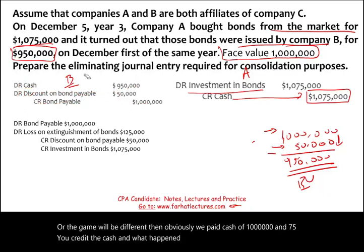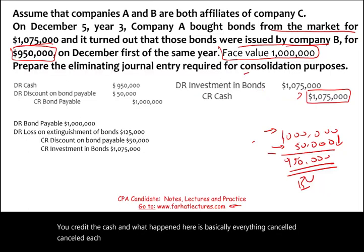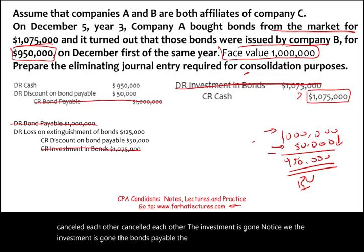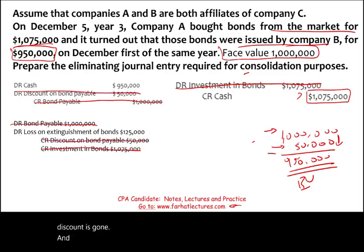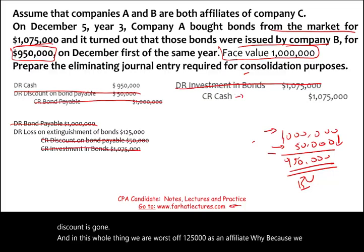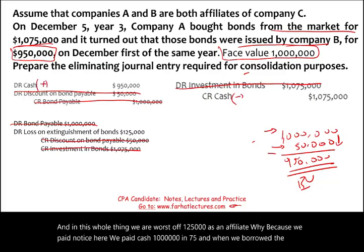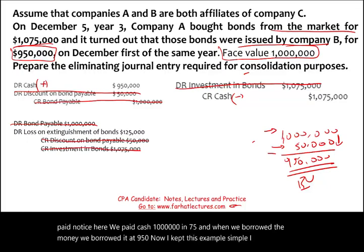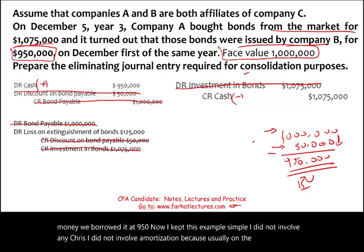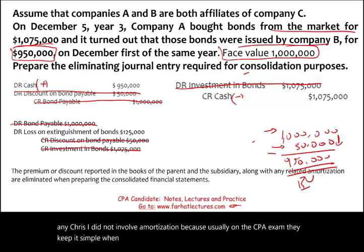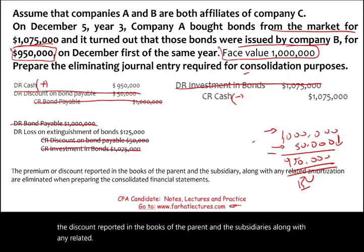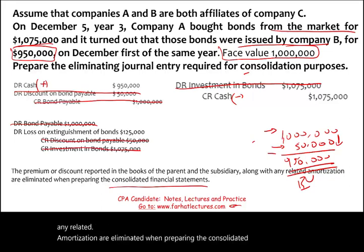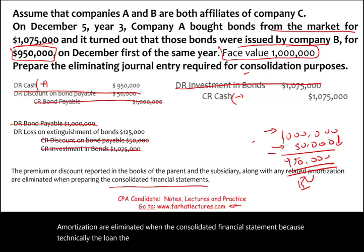Everything cancels each other out in the consolidation. The investment is gone, the bonds payable is gone, and the discount is gone. As an affiliate group, we are worse off by $125,000. We paid cash of $1,075,000 while we originally borrowed $950,000. The premium or discount reported in the books of the parent and subsidiary, along with any related amortization, are eliminated when preparing the consolidated financial statement, because technically the bond is no longer on our books.